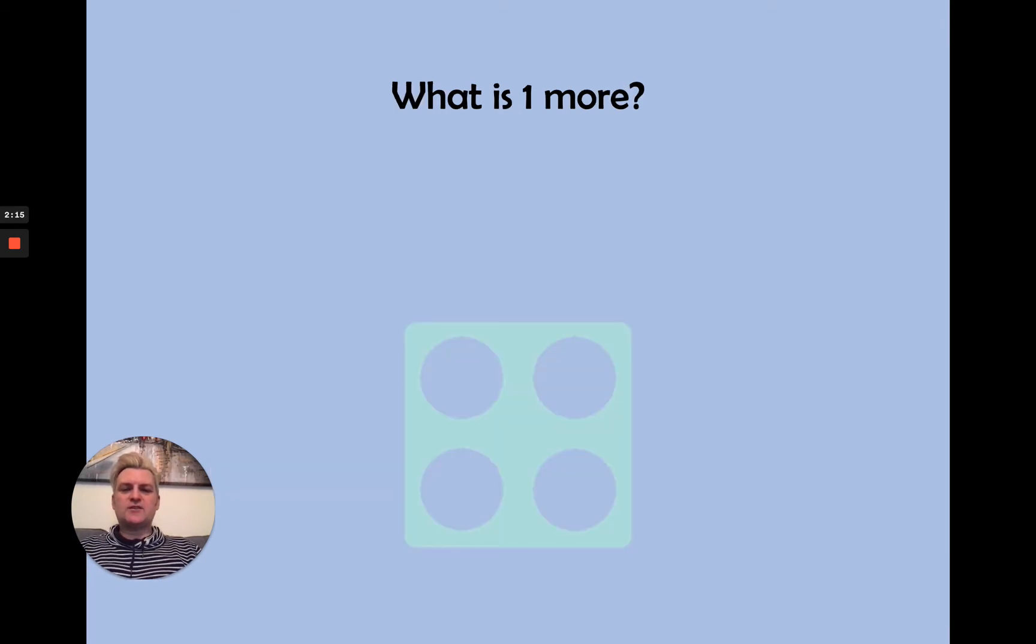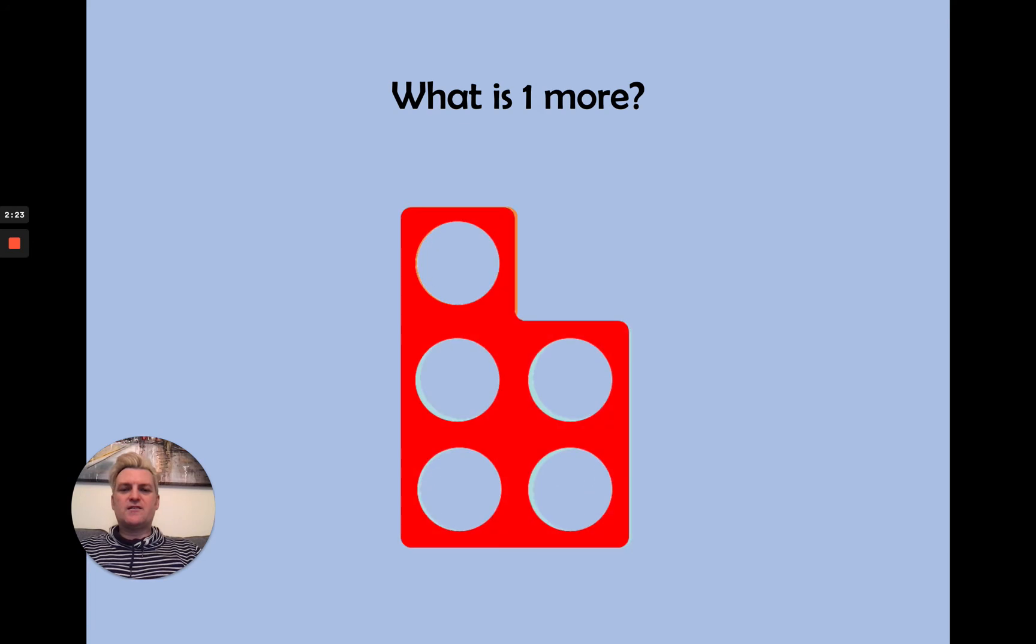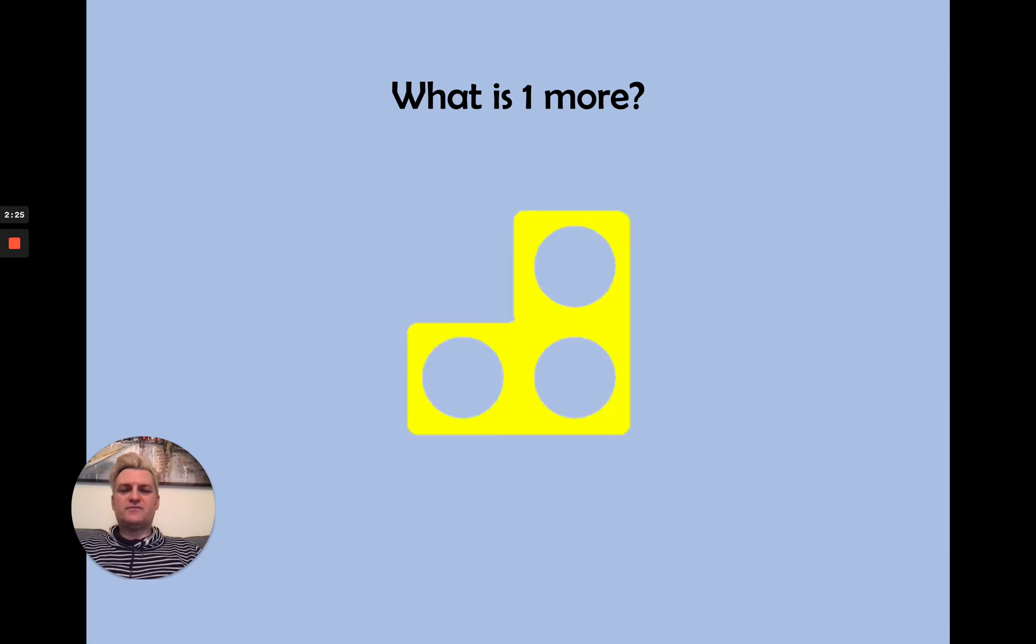Let's have a think about what is one more. Here is the numicon number four. What's one more than four? It is five. Here's the numicon three. What's one more than three? It is four.